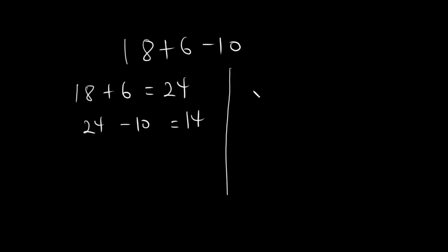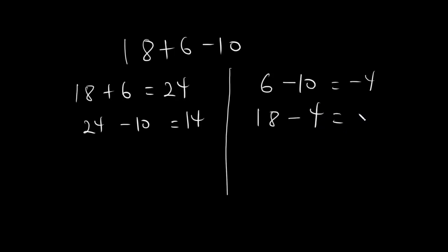Now let's consider subtracting first. 6 minus 10 is equal to negative 4, and 18 minus 4 is equal to 14. Since both ways are correct, addition and subtraction have the same precedence. So it doesn't matter whether you subtract first or add first — at the end of the day we are going to arrive at the same answer.